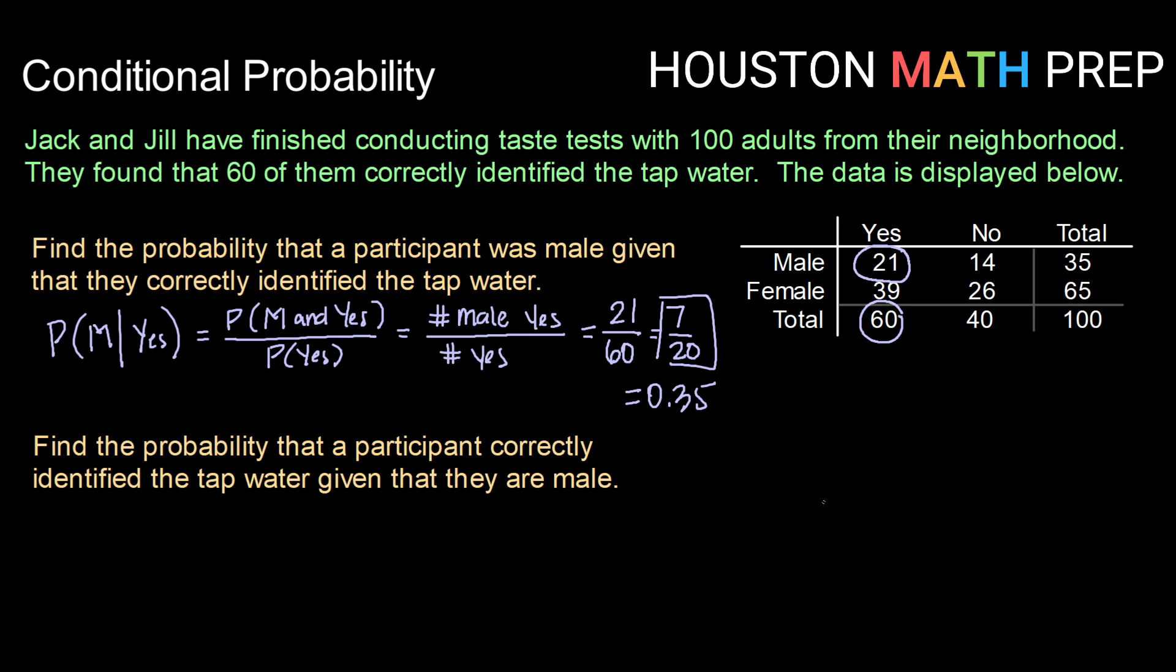Okay, great. Looking at another example. Find the probability that a participant correctly identified the tap water given that they are male. So now we're flipping the conditional around.